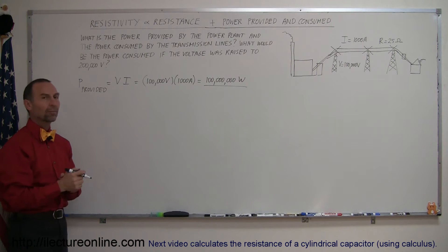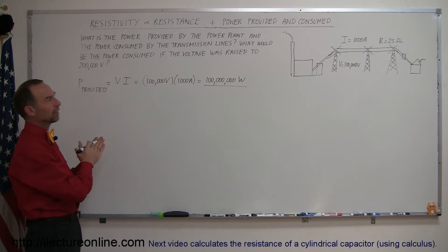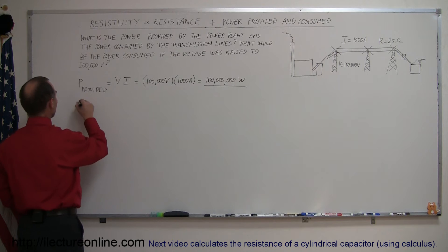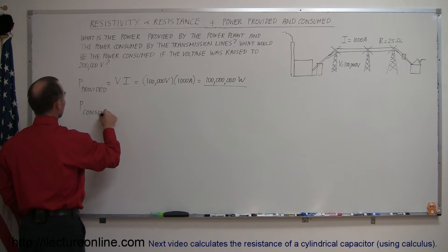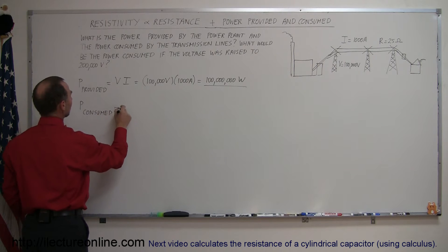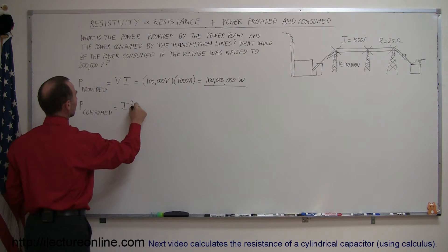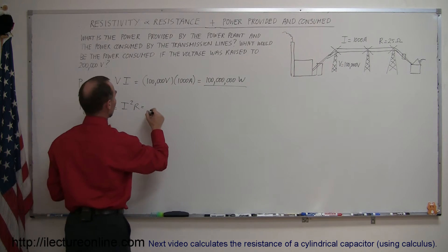So how much of that power is actually being consumed by the transmission? So you can say power consumed by the transmission lines is equal to I squared R, and in this case the current is a thousand amps.